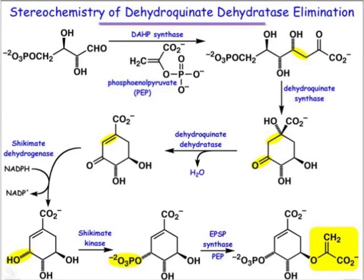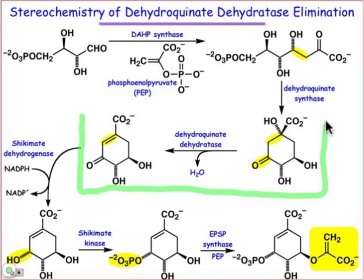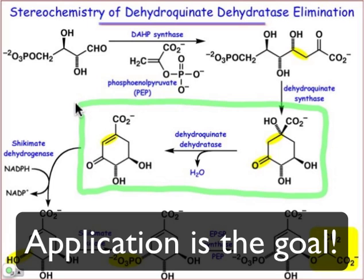In this webcast, we're going to take a look at one step of the shikimate pathway. We'll focus in on this elimination reaction catalyzed by dehydroquinate dehydratase. You're not really going to learn anything new in this webcast, but what this allows us to do is to apply some of the principles that you've been hearing about in the previous webcast to one particular step of this reaction mechanism.